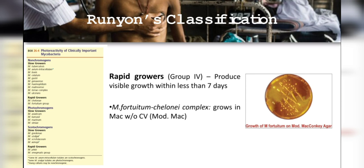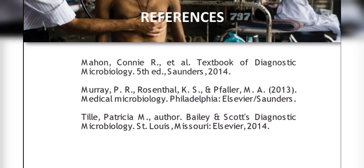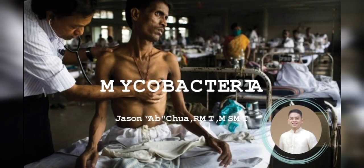Group 4 — rapid growing mycobacteria: growth apparent sooner than 7 days after subculture to Löwenstein-Jensen medium. Slow-growing mycobacteria by definition require more than 7 days to produce colonies on solid media; the variation in generation times results in visible colonies forming in 2 to 60 days at optimum temperature. The Mycobacterium fortuitum-chelonae complex grows on MacConkey agar without crystal violet — the modified MacConkey agar. That concludes the lesson on the mycobacterium group. For questions or clarifications, please don't hesitate to contact me. Thank you and have a good day.